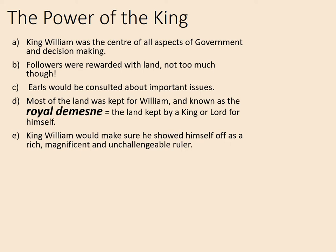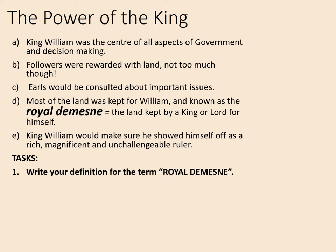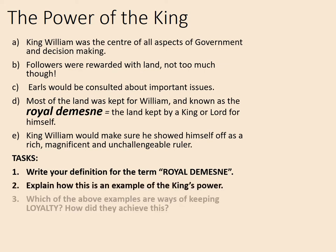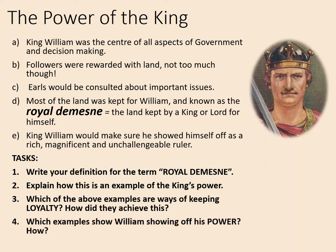King William would make sure he showed himself off as a rich, magnificent, and unchallengeable ruler. Your tasks: write your definition for the term royal domain, explain how this is an example of the king's power, which of the above examples are ways of keeping loyalty and how did they achieve this, and which examples show William showing off his power and how did he do this? Pause the video now while you complete those tasks.